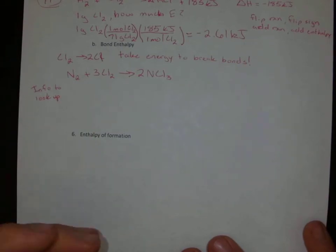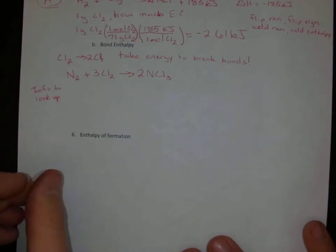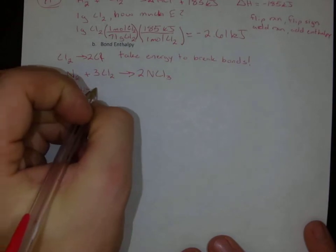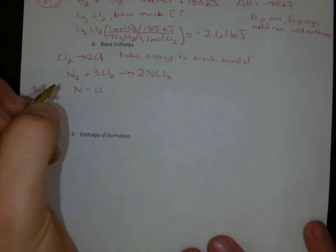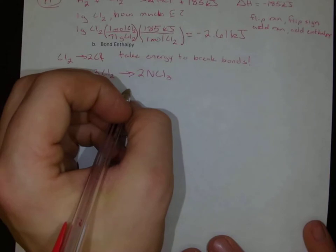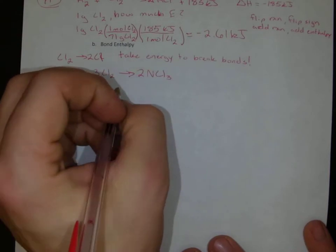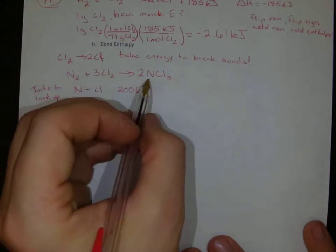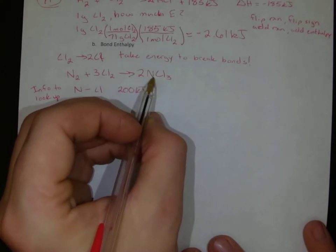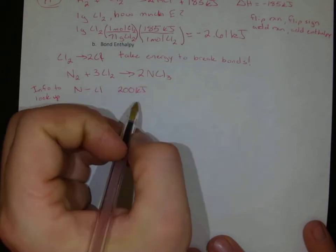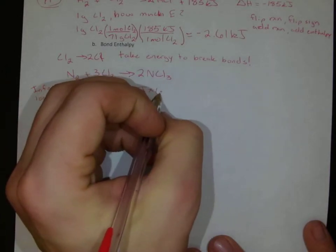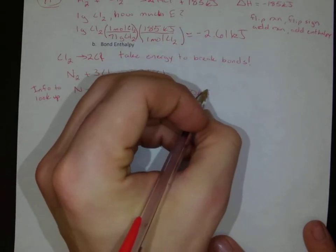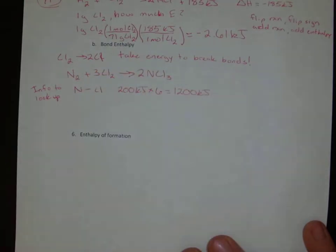But we know that an NCl bond, a single NCl bond is 200 kilojoules, but over here we've made 1, 2, 3 NCl bonds times 2, so we've got this times 6. We've got 1,200 kilojoules in the bonds over here.